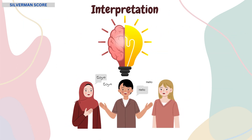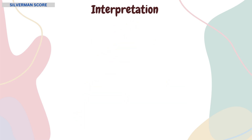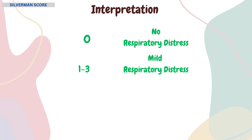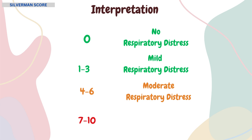Now let's understand the interpretation of the score obtained from the Silverman Anderson table. If the score obtained is 0, it means there is no sign of respiratory distress. If the score falls between 1 to 3, it suggests mild respiratory distress. If the score falls between 4 to 6, it refers to moderate respiratory distress. If the score falls between 7 to 10, it suggests severe respiratory distress.